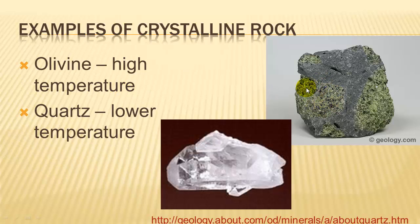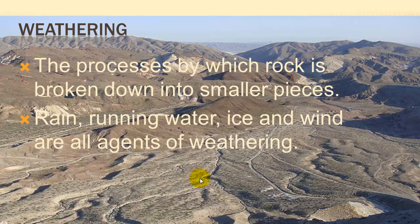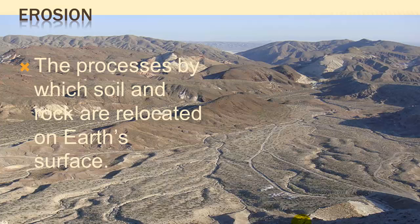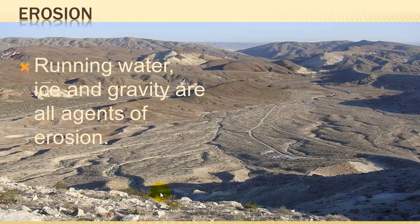Here's a picture of olivine — a really pretty green rock — and here's a picture of a quartz crystal. Weathering is the process by which rock is broken down into small pieces. Rain, running water, ice, and wind are all agents of weathering. You can see examples of mountains getting rounded and weathered by wind and rain, with material washing down into a river plain. Erosion is the process by which soil and rock are relocated on Earth's surface. Running water, ice, gravity, and wind are all agents of erosion.